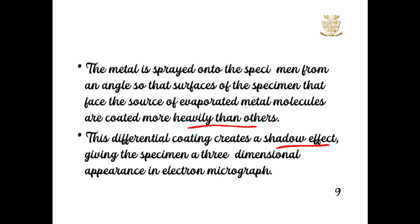Giving to the specimen a three-dimensional appearance in the electron microscope. The three-dimensional appearance in the microscope is known as metal shadowing.